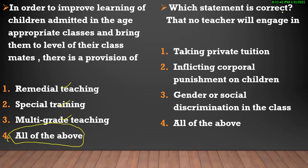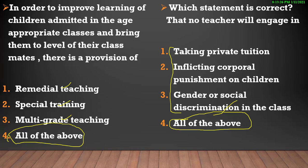Next question: इनमें से कौन सा correct है — that no teacher will engage in: taking private tuition, inflicting corporal punishment on children (corporal punishment means physical punishment), gender या social discrimination in the class, या all of the above. These all are negative points related to children's education, so all of the above is the correct answer — यह सब चीज़ें prohibited हैं in the education system now.